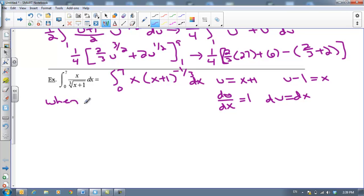So let's do our bounds of integration, when x equals 0, u equals x plus 1, so u is 1, and when x equals 7, u is going to equal 8. So our integral becomes the integral from 1 to 8 of (u - 1) times u to the -1/3 du, and we'll distribute again.